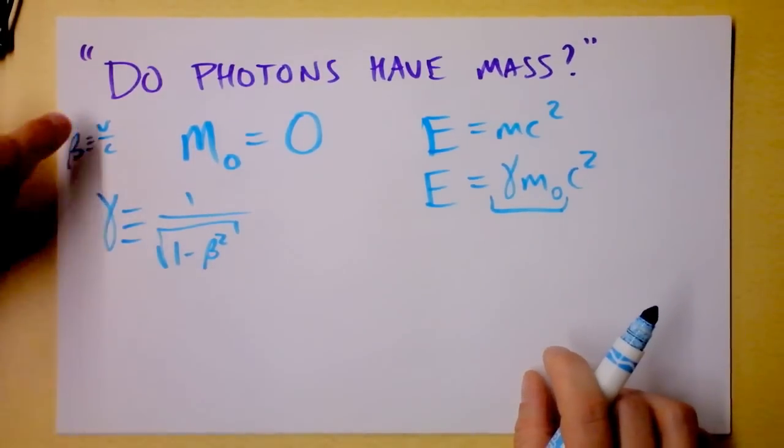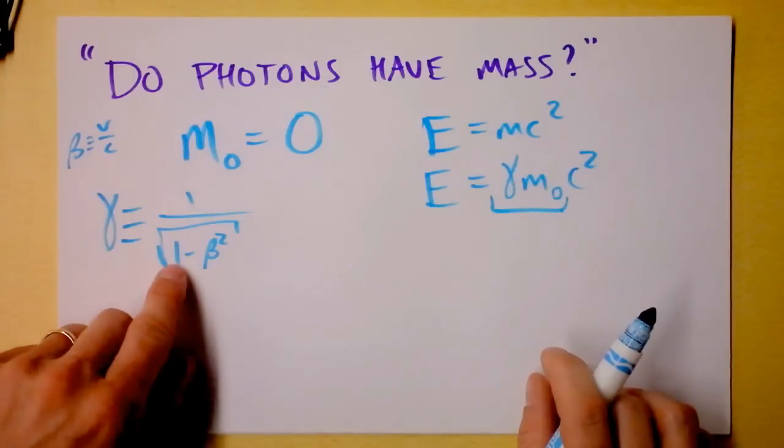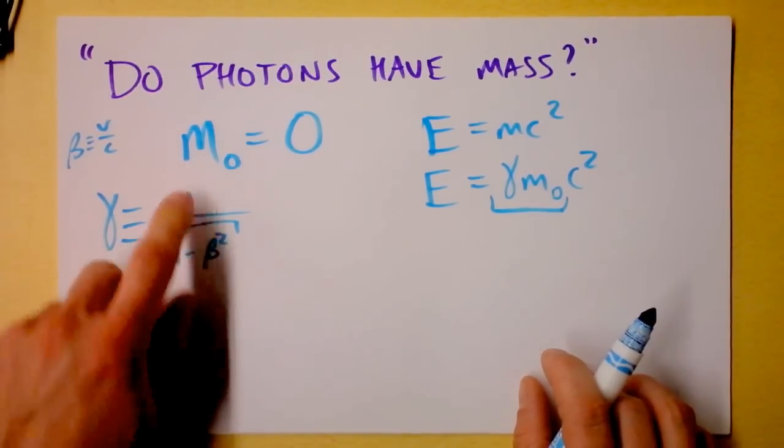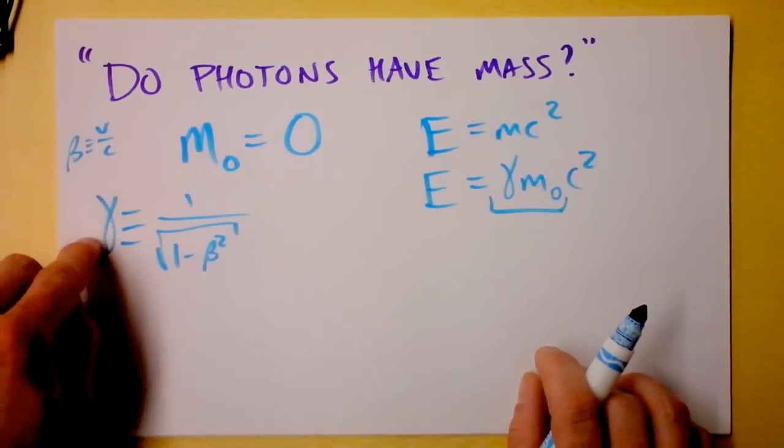So if you plug in C right here, you find that beta is equal to one. And I'm going to take one minus one squared, which is zero. I'm going to take the square root of zero, which is zero. And I'm going to divide one by zero, which is, in fact, infinity.